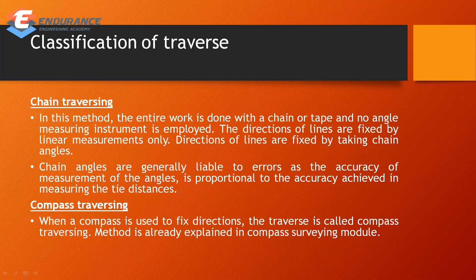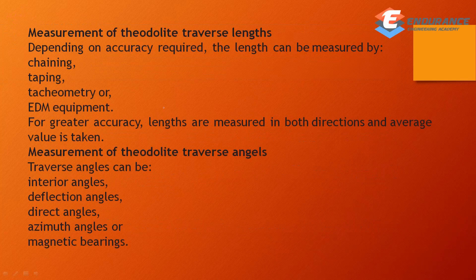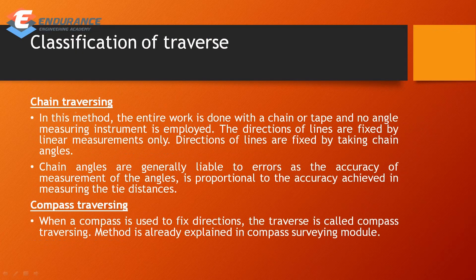Next is the classification of traverse. In classification, there are chain traversing and compass traversing. First is chain traversing: the entire work is done with a chain or tape, and no angle measuring instrument is used. The direction of lines is fixed by linear measurements only.